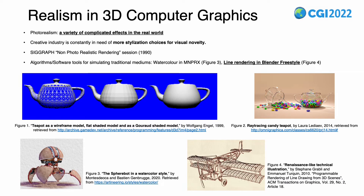Let me start by introducing the historical development of visual style in 3D computer graphics. Computer graphics has traditionally focused on photorealism, which means simulating a variety of complicated effects in the real world. The creative industry is looking into expanding the style to more stylization choices for visual novelty. One major concern in this field is to create algorithms and software tools for simulating traditional mediums, such as watercolor simulation in NPR and line rendering in Blender Freestyle.